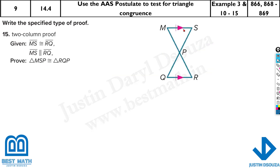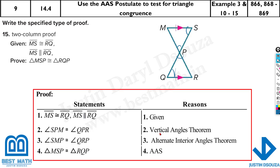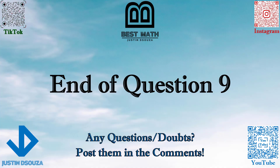Here, MS is parallel to RQ, and MS is also congruent to RQ — both parallel and congruent. That means we need to find two angles: one using vertical opposite angles and one using alternate angles, or two alternate angles. So we have vertical angle and alternate angle — angle, angle, and side congruency. That is the end of this question.